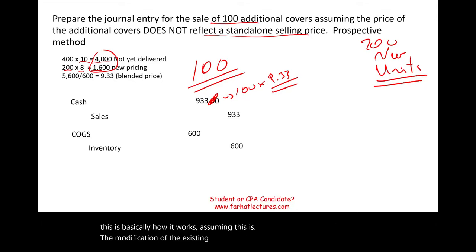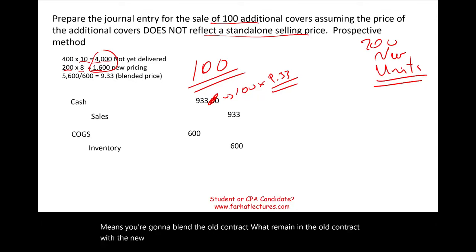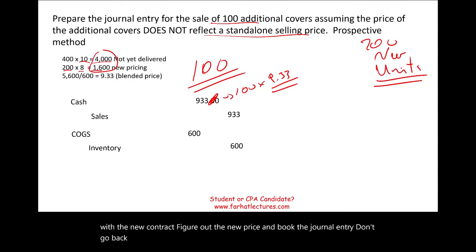To summarize: blend the remaining old contract with the new contract, determine the new blended price, and book the journal entry going forward. We do not go back retrospectively — it is always treated using the prospective method, since those prior sales occurred before the contract modification.